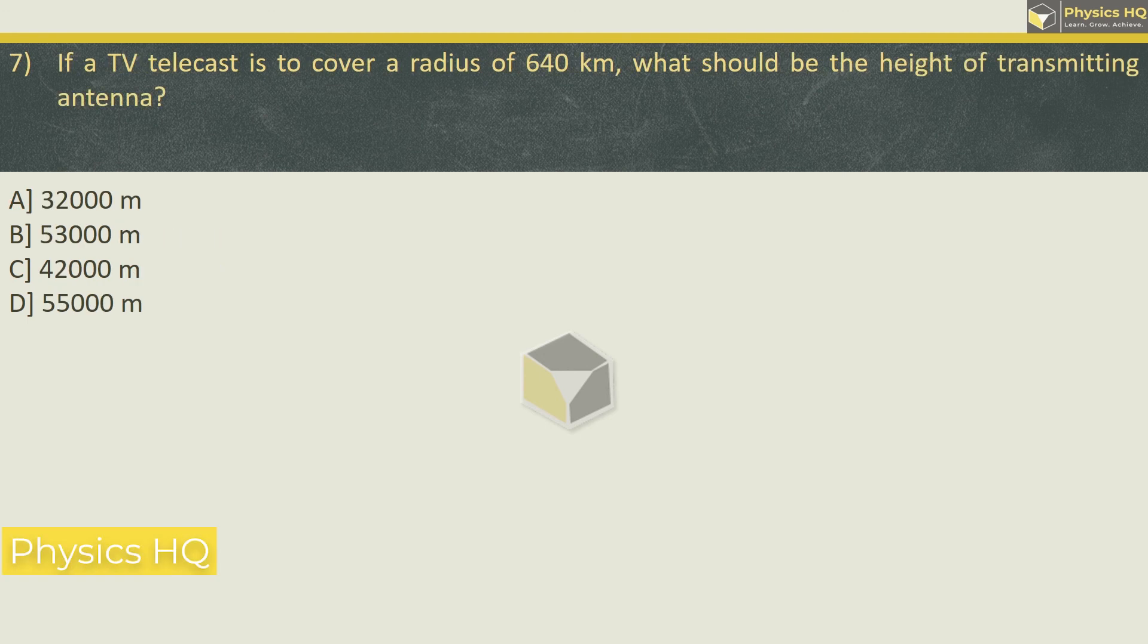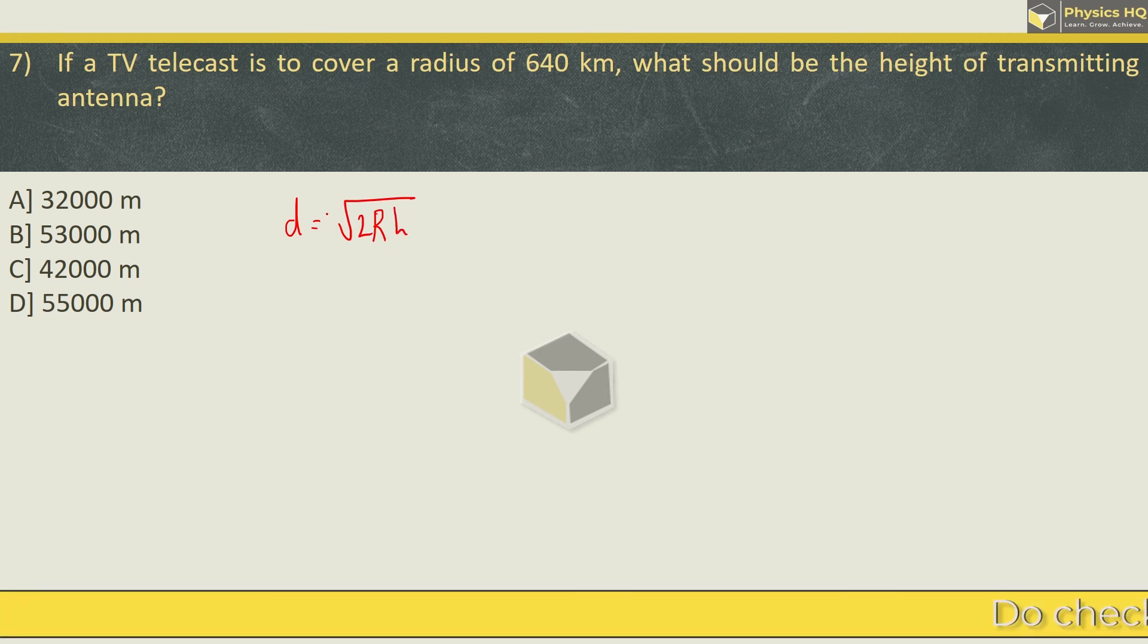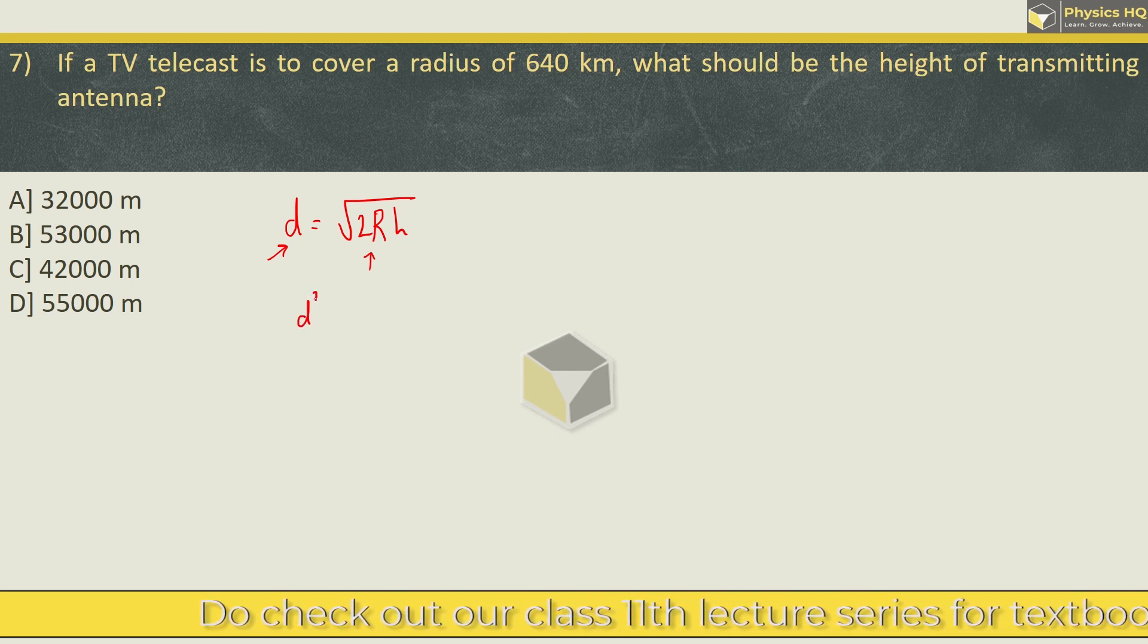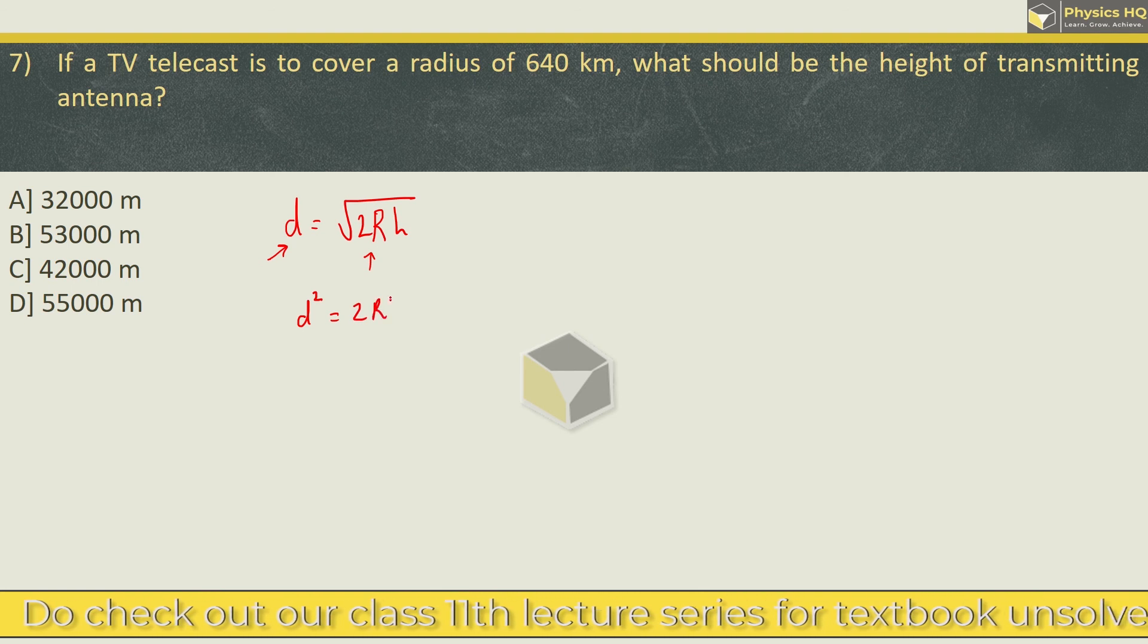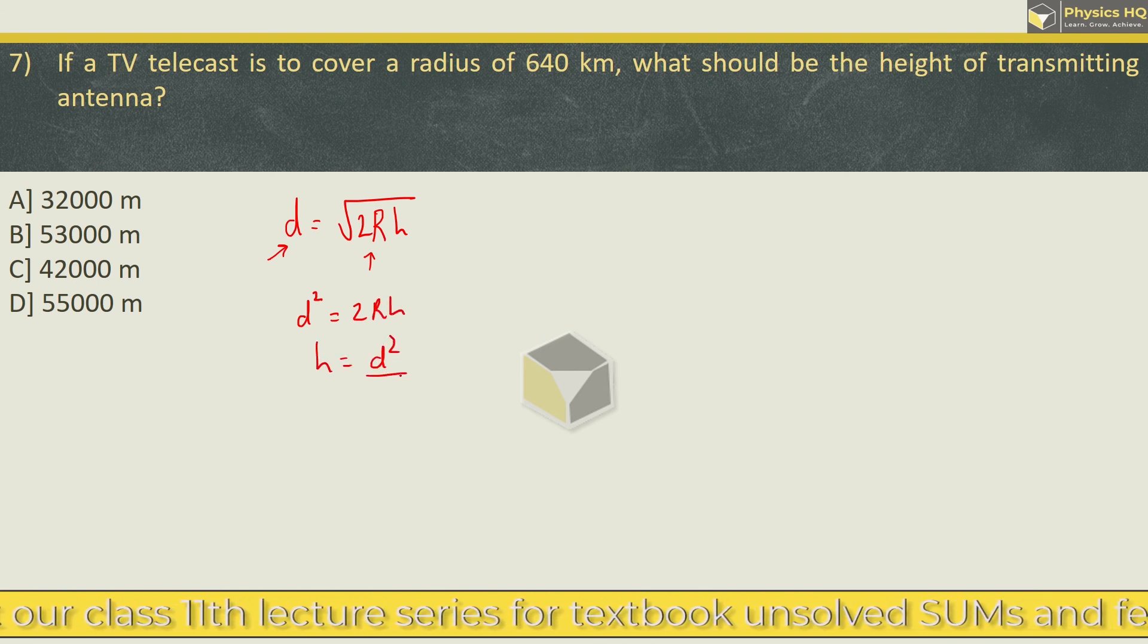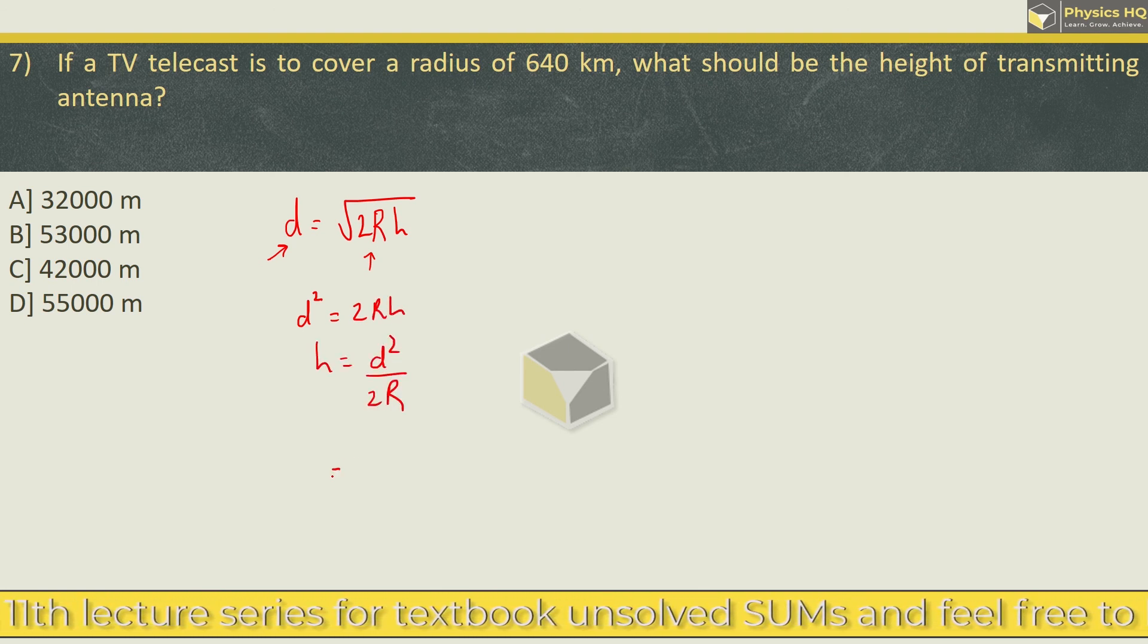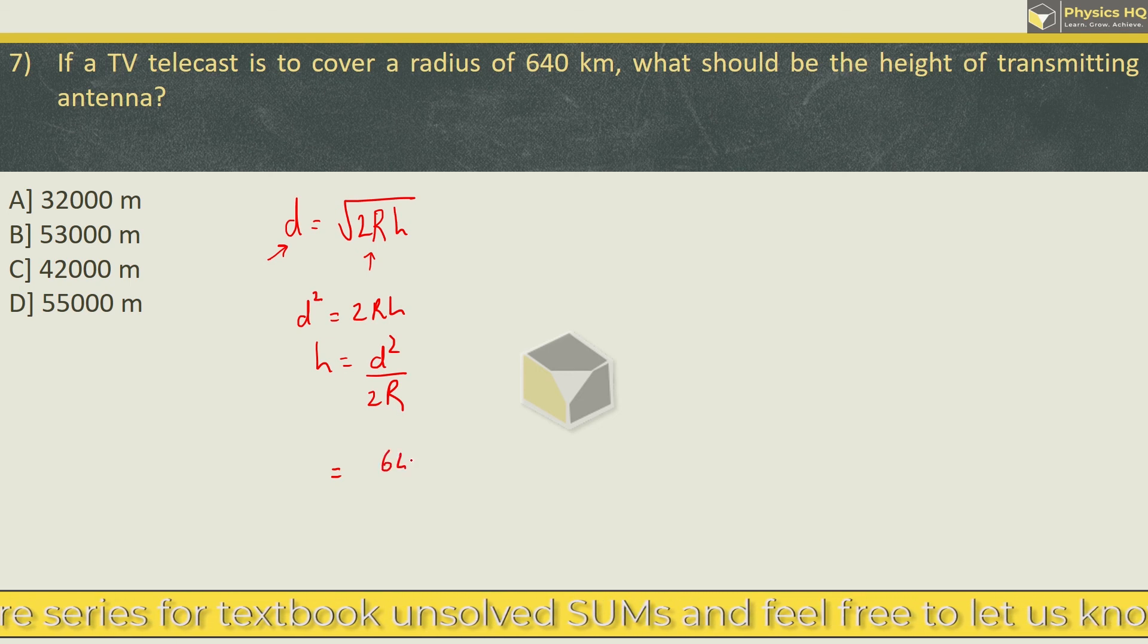Let us check out the next MCQ. If a TV telecast is to cover a radius of 640 kilometers, what should be the height of the transmitting antenna? In the fifth MCQ we saw that distance is given by d = √(2rh). We have distance given, the radius of earth is 6400 kilometers, we need to find height. So we square both sides and rearrange: d² = 2rh, or h = d²/(2r).